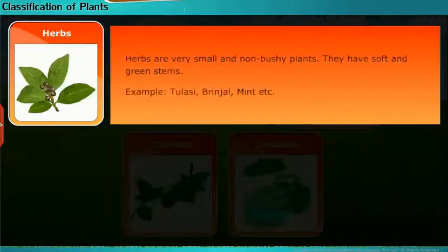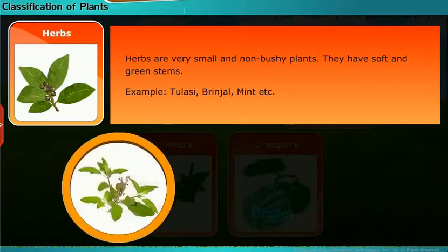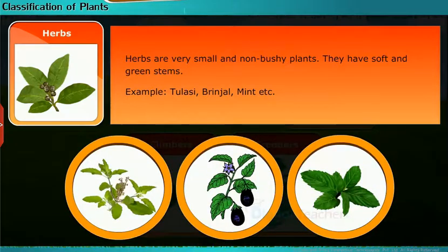Herbs are very small and non-bushy plants. They have soft and green stems. Examples include tulsi, brinjal, and mint.